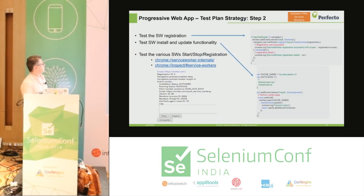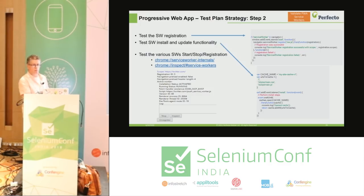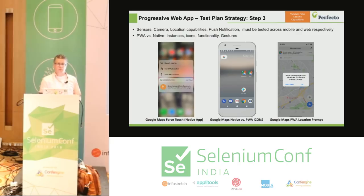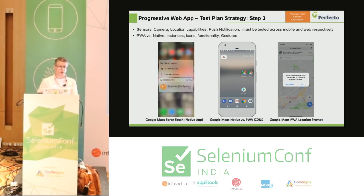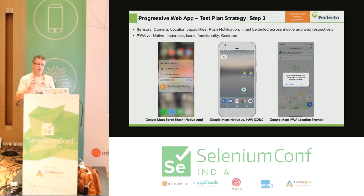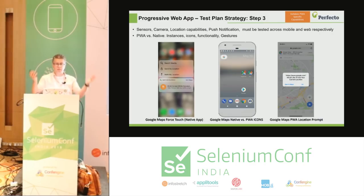You can access Chrome service worker internals from a URL, where you can stop, inspect, and unregister a service worker in a PWA directly from your Chrome browser — no code required. You can start doing this automatically from the browser itself. For PWA-specific capabilities like Google Maps — also a PWA — it works with GPS and location sensors. You need to make sure these are working fine across all platforms, Android and iOS. Think about web and mobile combined together; the test cases grow in that regard. Automation is key.